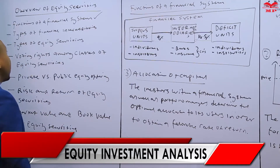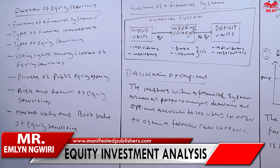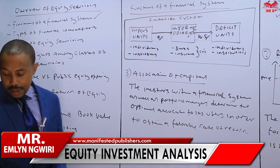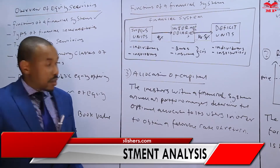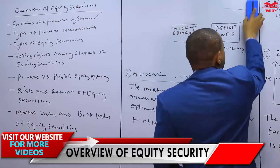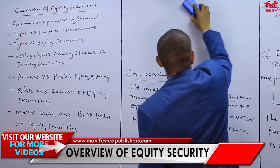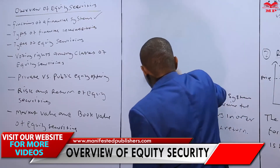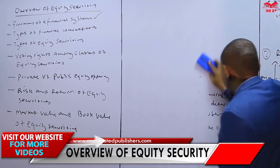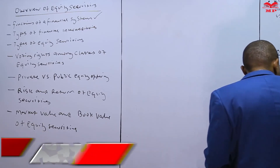We now move on to look at the types of financial intermediaries. The first type includes brokers, dealers, and exchanges.